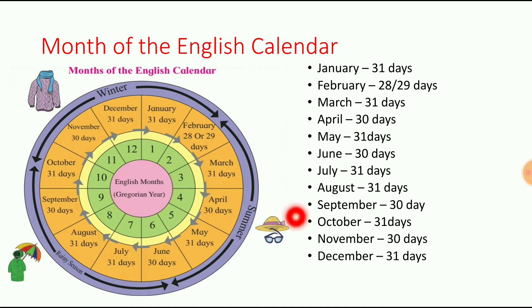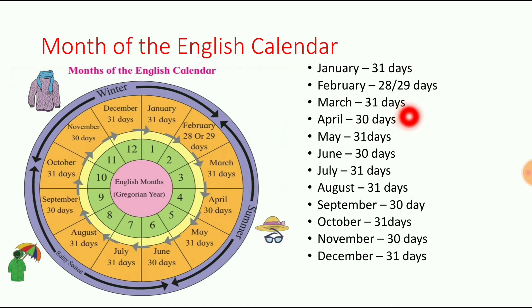Next: March. M-A-R-C-H, March. How many days in March? 31 days. 31 days होते हैं.